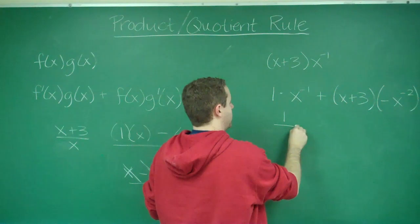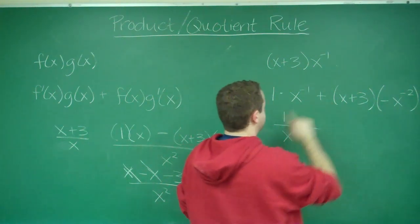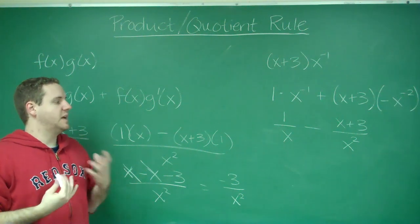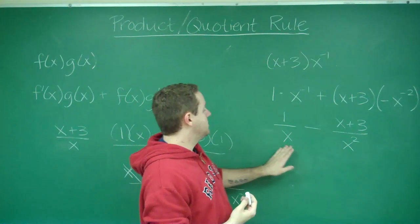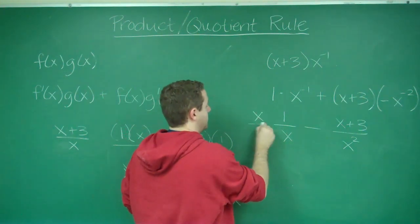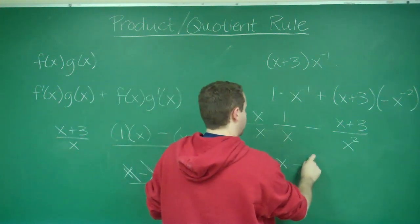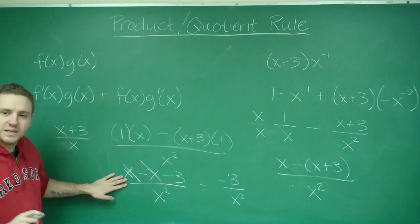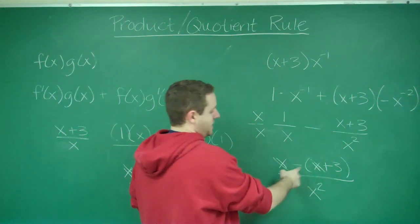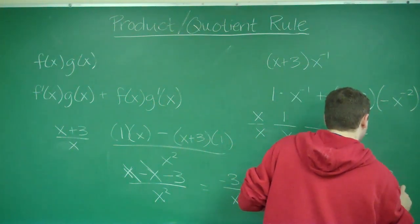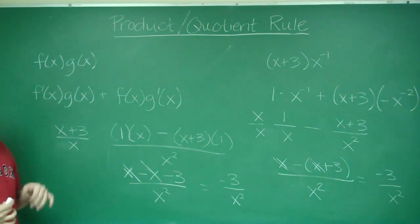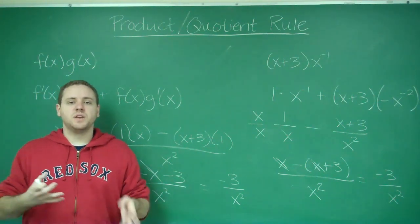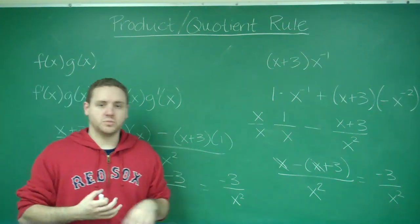Writing these as fractions: we have 1/x minus (x + 3)/x squared. To combine them, find a common denominator — x squared. Multiply the first term by x/x to get x/x squared, giving us (x minus (x + 3)) all over x squared. Distributing, the x's cancel and you're left with negative 3 over x squared — the exact same answer. So anytime you have a quotient, you can convert it to a product and use the product rule. Think about which approach feels easier for a given problem and use that on your test.